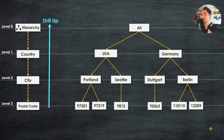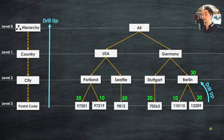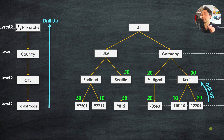Drill up is exactly the opposite of drill down — it takes us from bottom to top, from lower to higher levels of detail. Starting at the leaves, we use drill up to move from postal code to city. For example, Berlin totals 30 (the sum of 10 plus 20), Stuttgart stays at 20, Seattle stays at 50, and Portland sums up to 40.